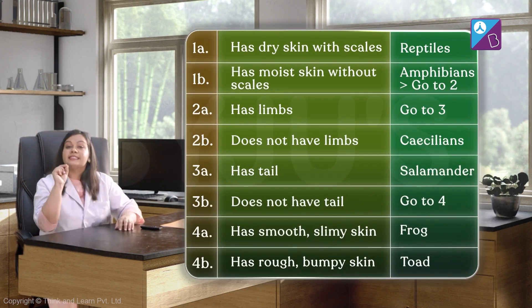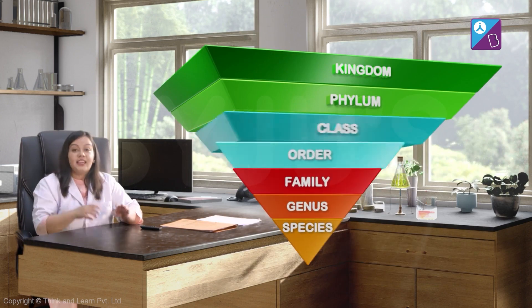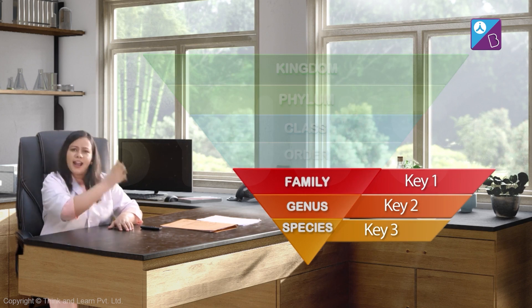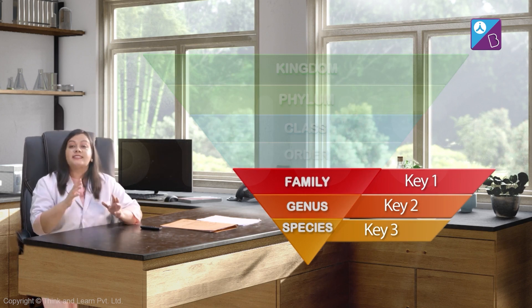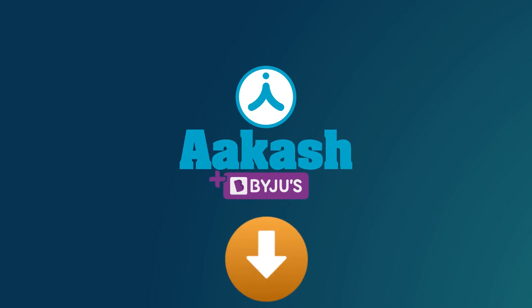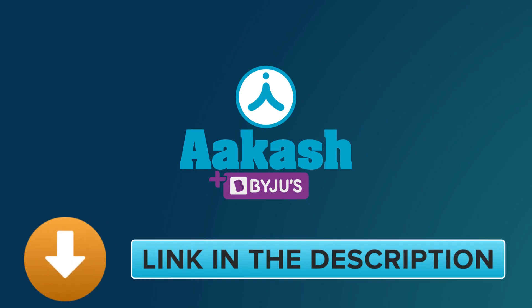The key that we have used is a simplified one created to help you understand how keys are used. In reality, separate keys are required for identifying the family, genus, and species of an organism. Such extensive keys help users in correctly identifying the organism in question. You can find keys in many books and research articles. Some herbaria and museums may also have keys to identify different organisms. If you enjoyed watching this video and want to learn more in a visually stunning way, download the app now — link is in the description.